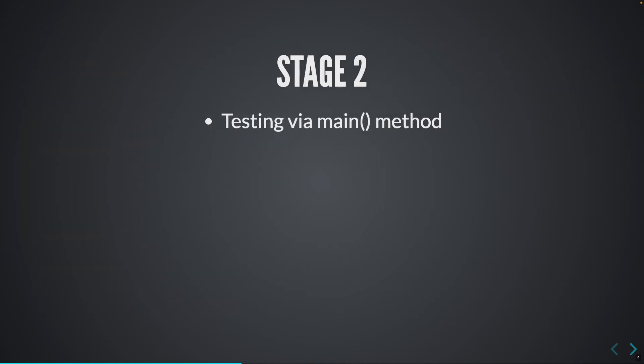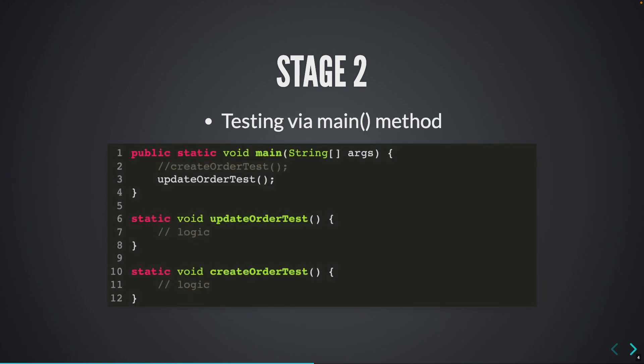Then there was a next step where I thought — mainly because of my laziness to fill all those forms — why not create a simple class with a main method and then write code to actually call whatever method you are working on to see how it is working. So I created a simple class with a main method, and whenever I was working on a feature I'd create a simple static private method, implement the logic, instantiate whatever service I was working on, call the method, and verify the behavior.